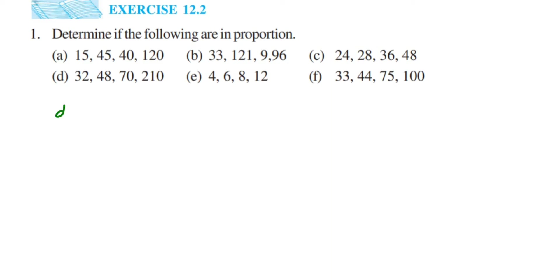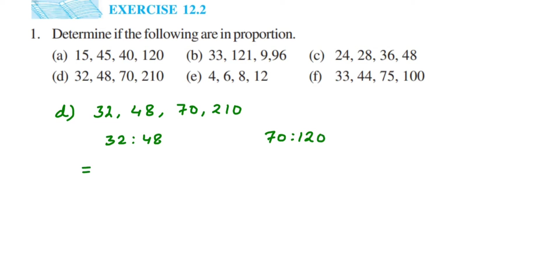Fourth question: we have 32, 48, 70, and 210. First ratio is 32 is to 48. For 32 by 48: cancel in the four table — four eights are 32 — giving 8 by 12. Cancel again in the four table — four twos are 8, four threes are 12 — so we get 2 by 3.